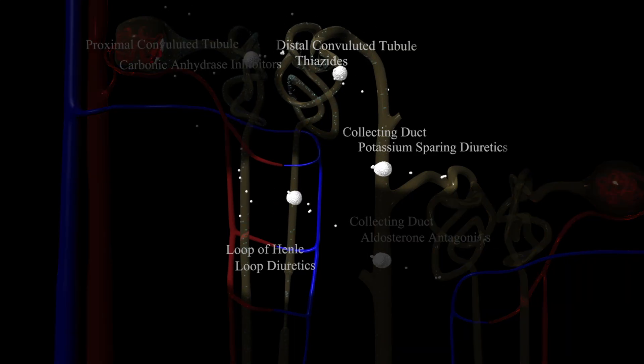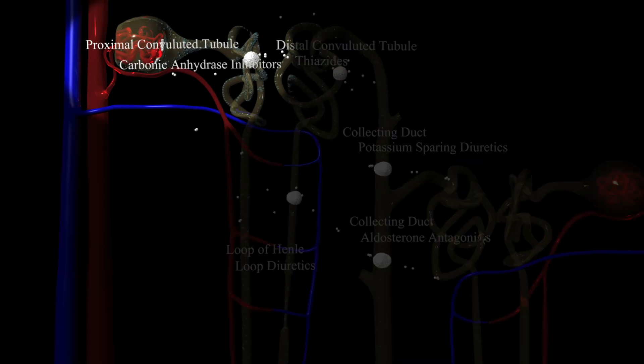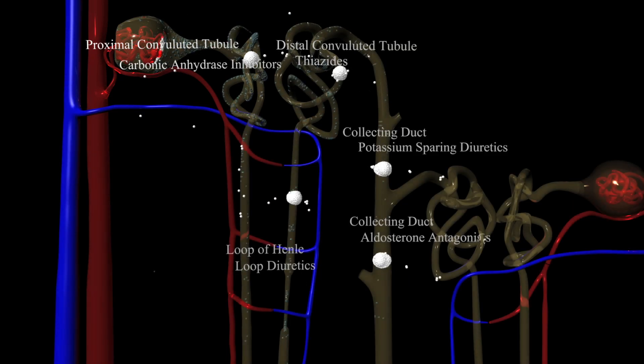In these areas, there are transporters that transport sodium out of the nephron. Loop diuretics, thiazides, and potassium-sparing diuretics block this transporter and keep sodium locked in the nephron. Here, carbonic anhydrase inhibitors inhibit the enzyme carbonic anhydrase from causing a reaction that will allow sodium to leave the nephron.